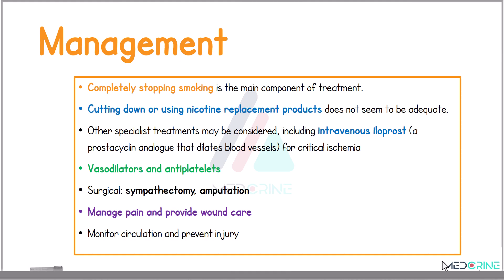For critical limb ischemia, intravenous iloprost, which is a prostaglandin analog, may be considered to dilate the blood vessels. Vasodilators together with antiplatelet agents may also play a role in the treatment.